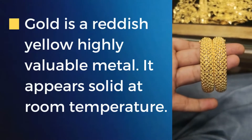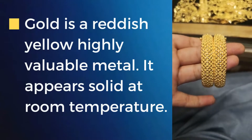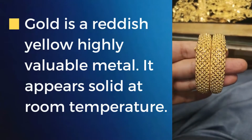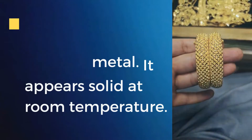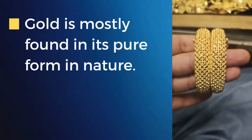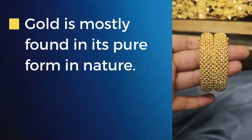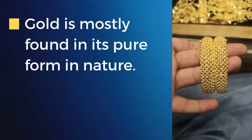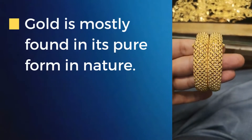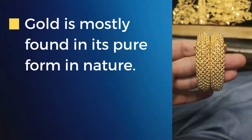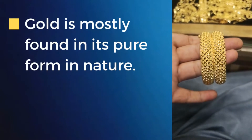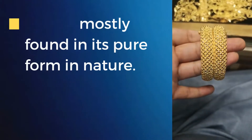Gold is a reddish-yellow, highly valuable metal. It appears solid at room temperature. Gold is mostly found in its pure form in nature. Other various forms of naturally occurring gold are found with tellurium, selenium, and bismuth.